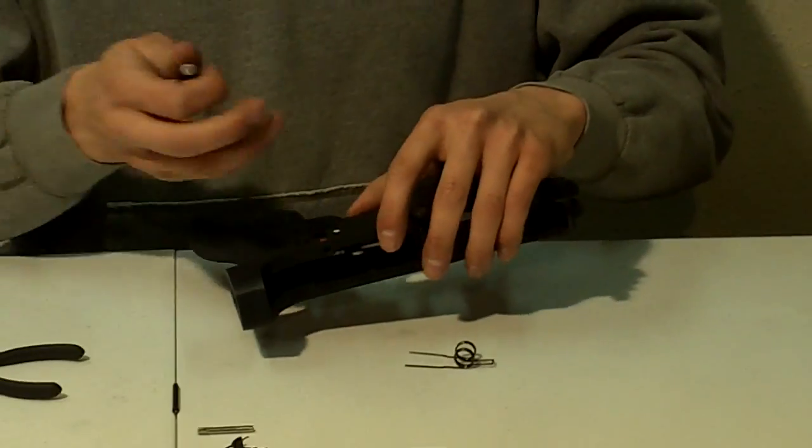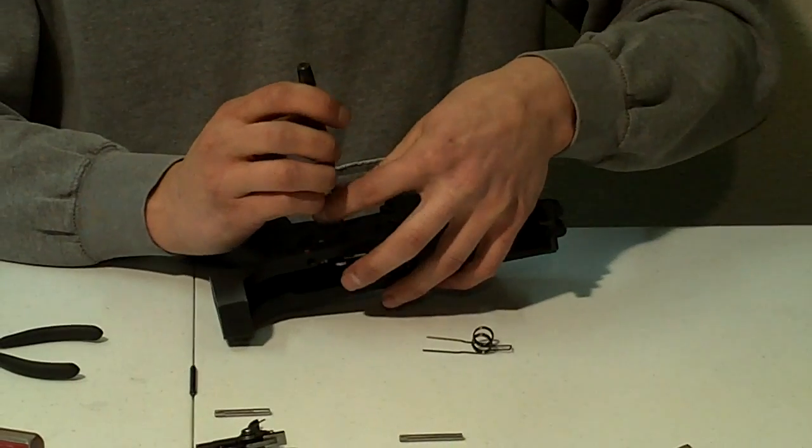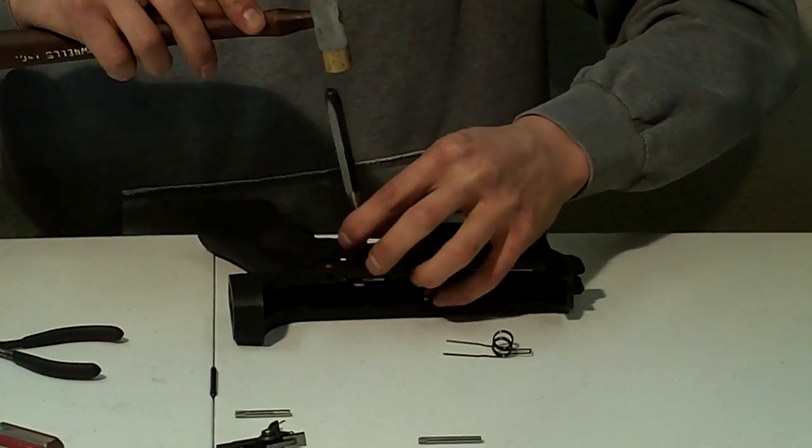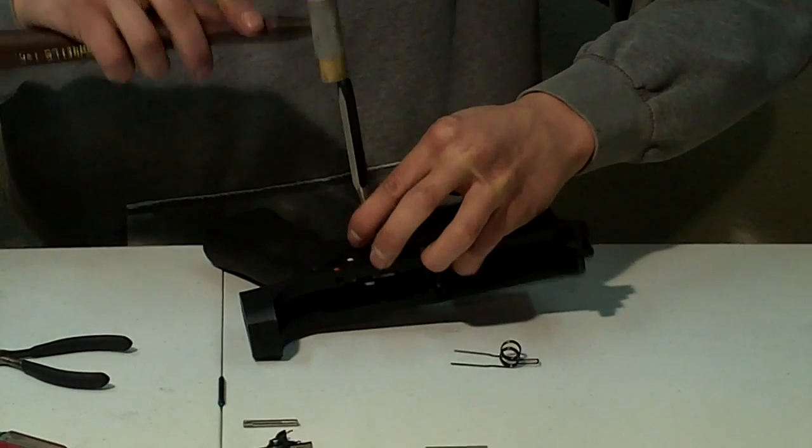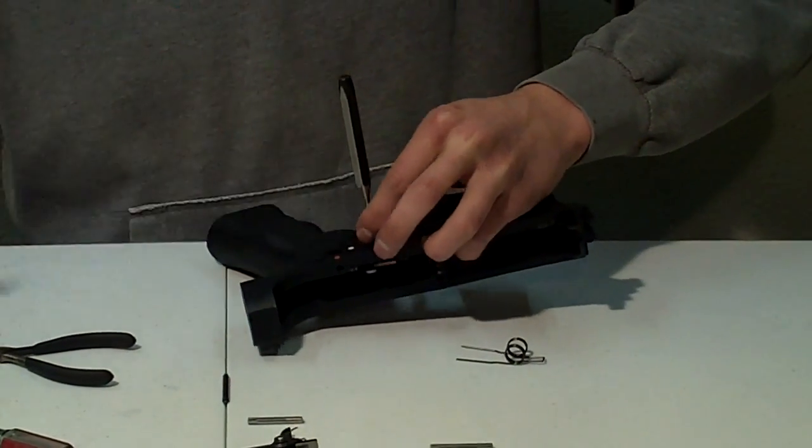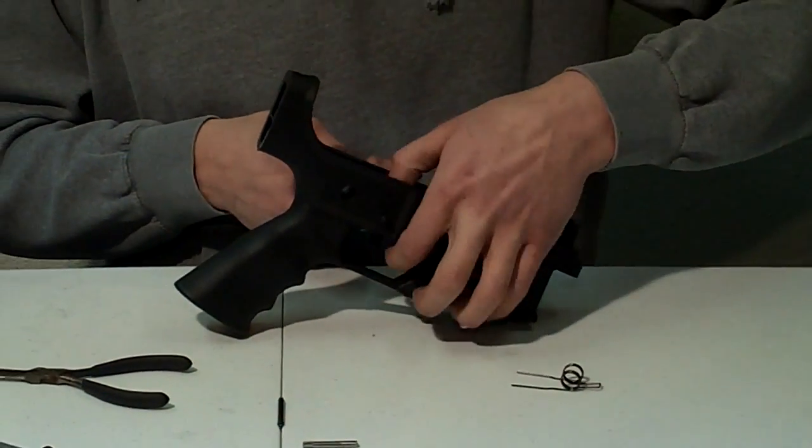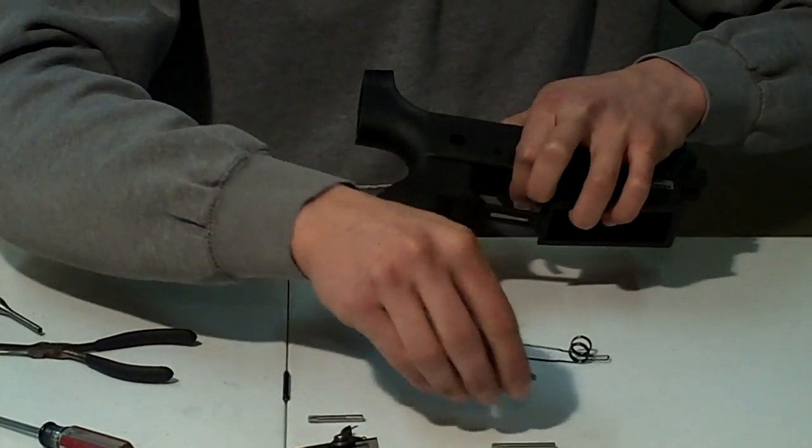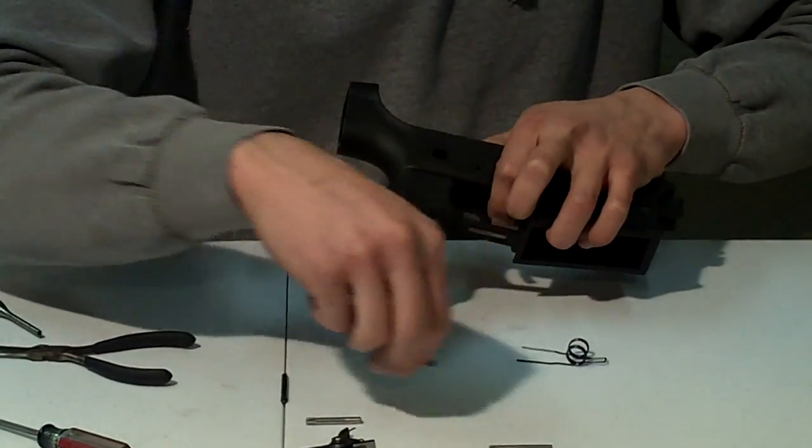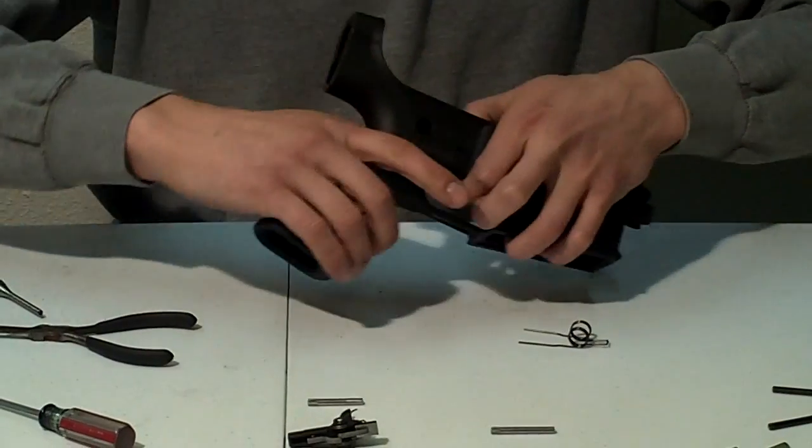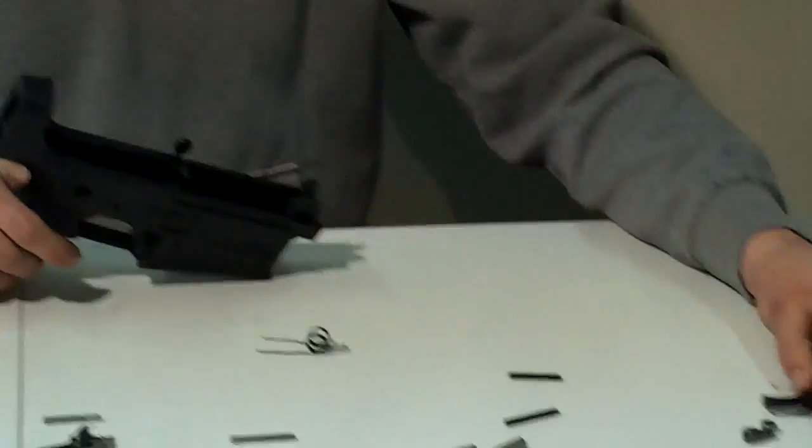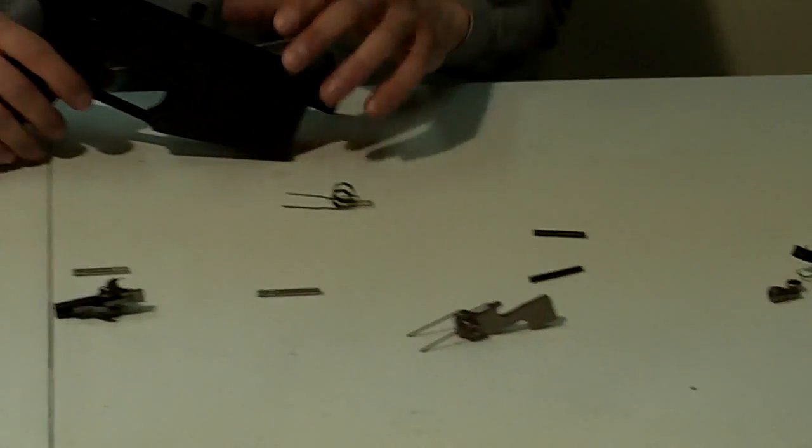Next you'll need to drive out the factory trigger pin using the same method as before. Again, putting a lot of pressure on the spring and disconnector will make that easier to take out. And then go ahead and remove your factory trigger assembly. You can set that aside and you won't be using any part of that anymore.